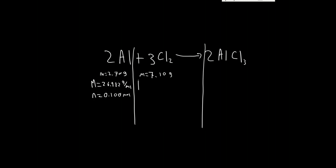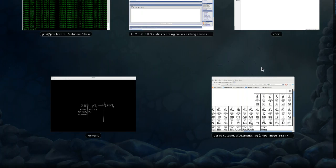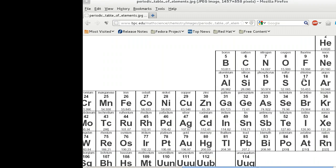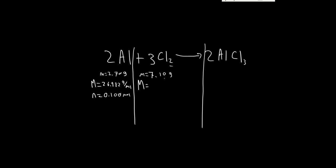So chlorine, molar mass, and keep in mind this is Cl2, so it's going to be 2 times that. And there's chlorine, 35.453, my bad, 35.453, and there's 2 of them. So that should be 70.906 grams per mole.